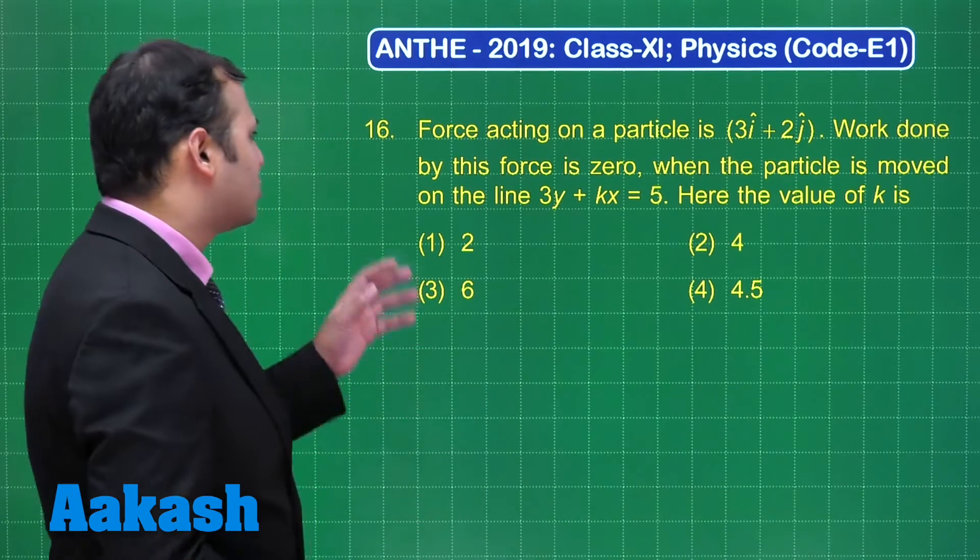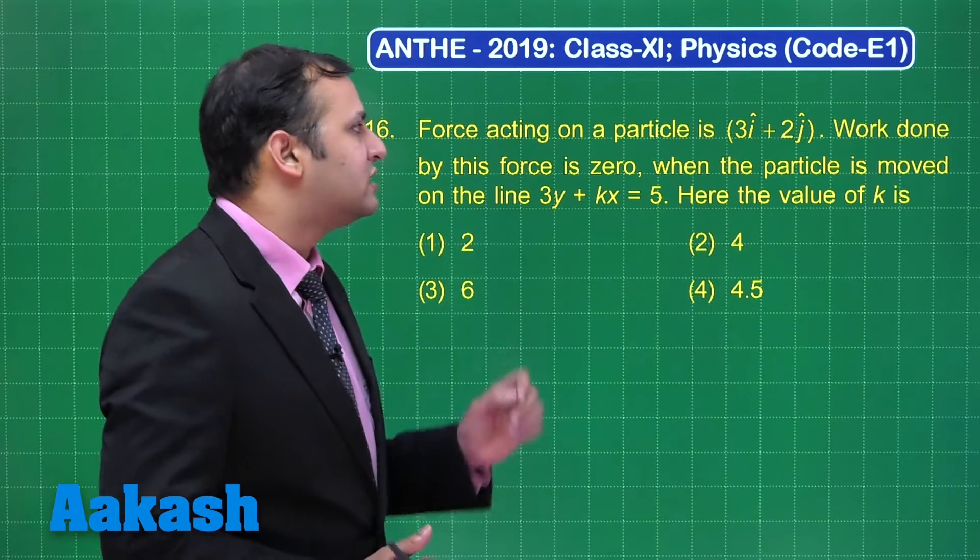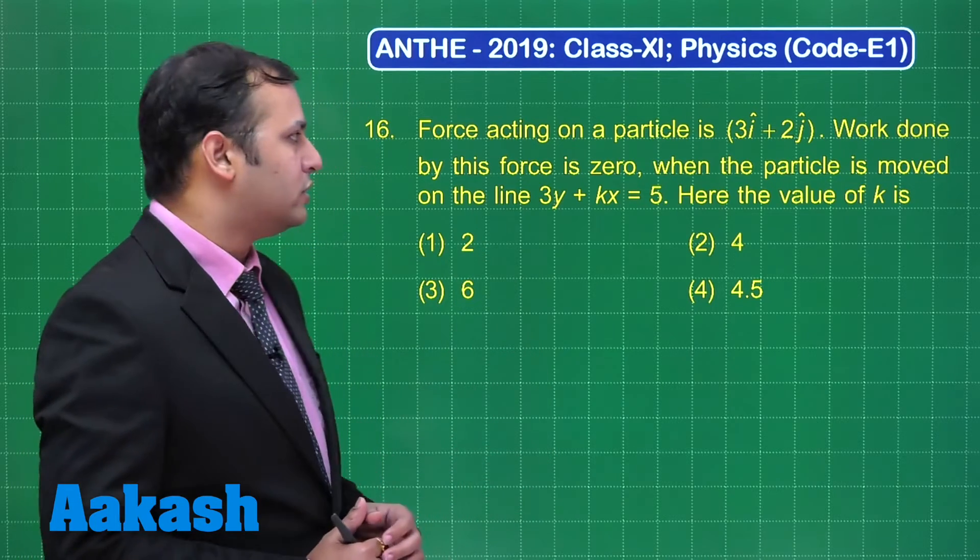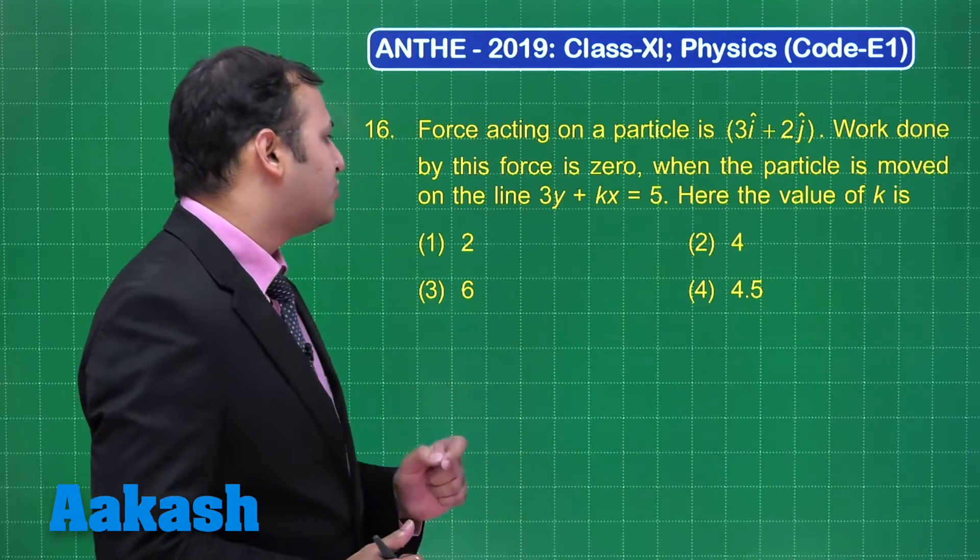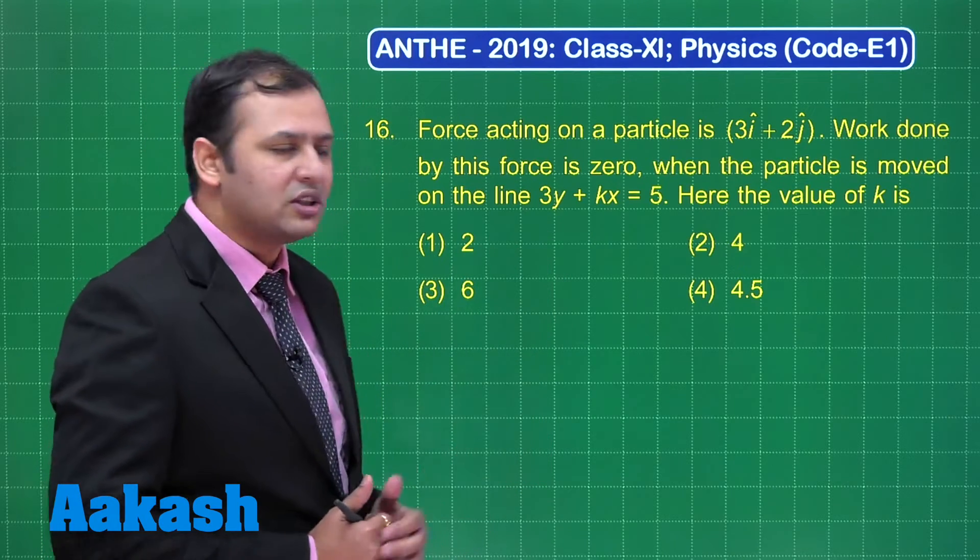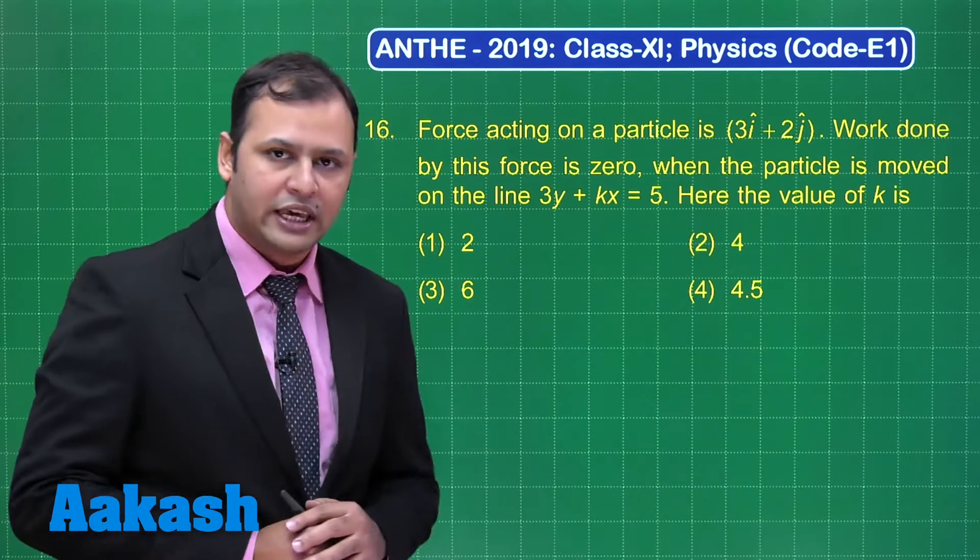Let's take our next question, question number 16. As per the question, force acting on a particle is (3i + 2j) Newton. Work done by this force is zero when the particle moves on a line given by the equation 3y + kx = 5. We have to find the value of k.